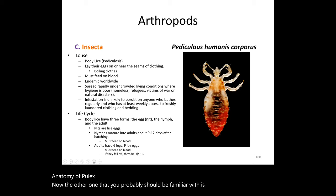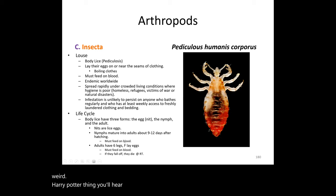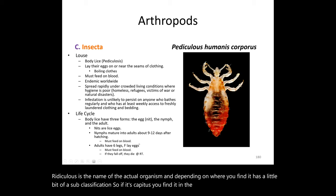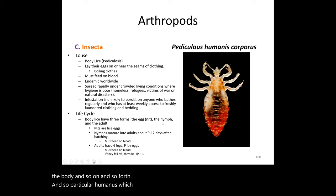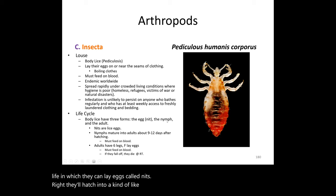Another important insect vector is Pediculus, which is frequently mispronounced. Pediculosis is the disease; Pediculus is the organism itself. Depending on where it's found, it has subspecies: capitis for the head, corporis for the body, and so on. Pediculus humanus corporis is the body louse. Lice have three life stages: they lay eggs called nits, hatch into nymphs, then reach the adult stage.